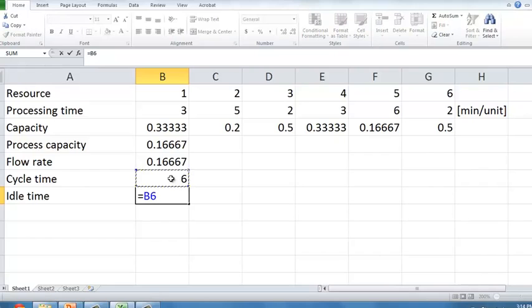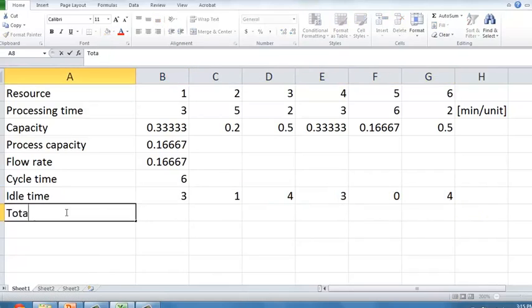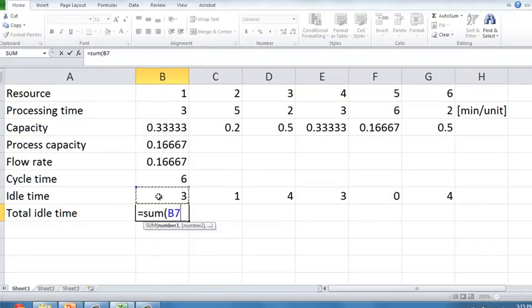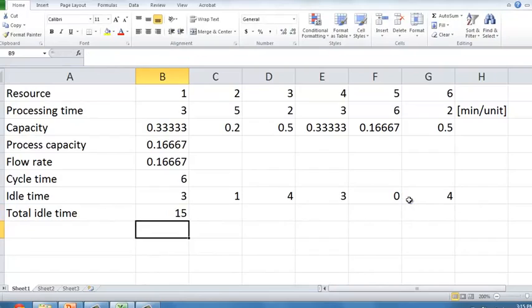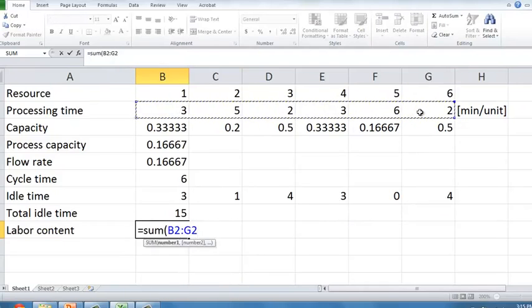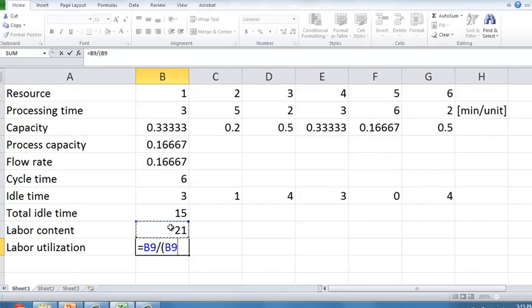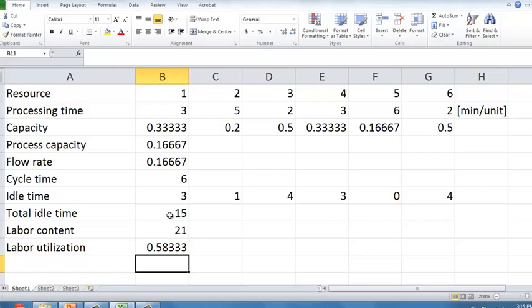For that, I'm going to take the cycle time, and I'm going to subtract the processing time at each of the resources. With this in mind, I can compute the total idle time, which we confirm to be 15 minutes. Now, is 15 minutes a lot of idle time or not? This is really hard to judge. And so, we compare this number to the total labor content in the process, which we previously defined as the sum of the activity times. I can then compute my labor utilization as the ratio between the labor content and the labor content plus the idle time. 58% is my average labor utilization in the process.